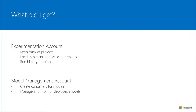This is most likely my last slide before we jump onto the demo. As a result of getting the experimentation and model management accounts, you have these abilities. The experimentation account keeps track of your projects — you can start simple on local and then scale up or scale out. We'll also track your run history. With model management, we maintain all your containers for models, enable you to manage and monitor your deployed models, and support lineage, auditability, and explainability around the models.